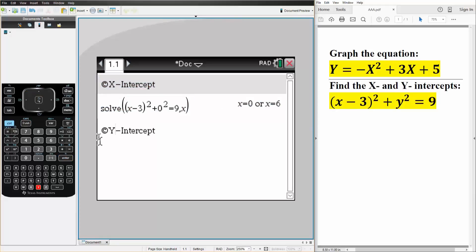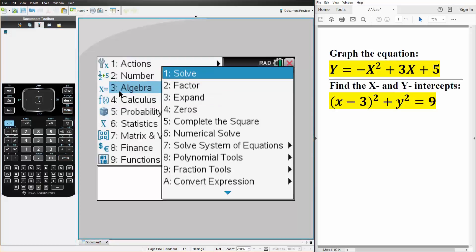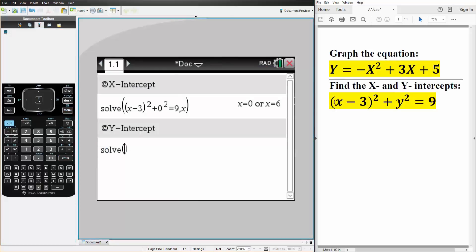And so next we want to get the y intercept. We do something very similar. We will hit menu, algebra, solve, but instead we say that x is zero. So we'd say zero minus three squared plus y squared is equal to nine, comma y. We want to get the y intercept, so comma y where x is zero. We hit enter.